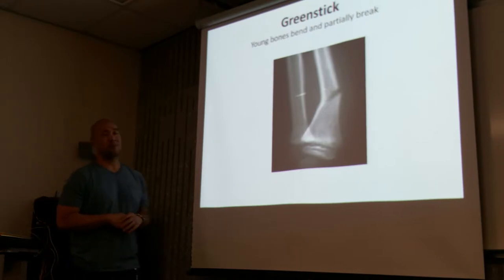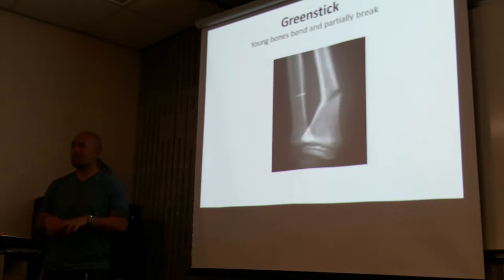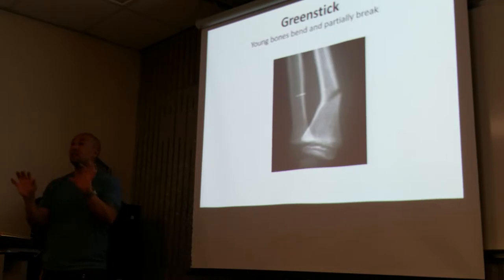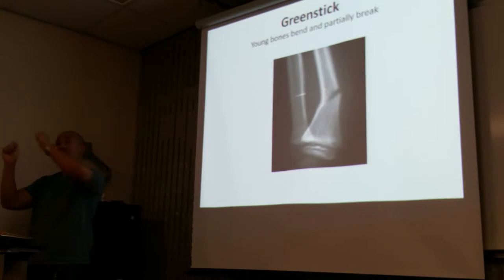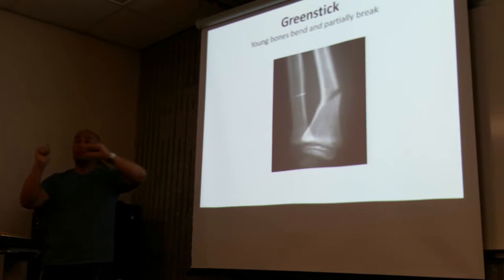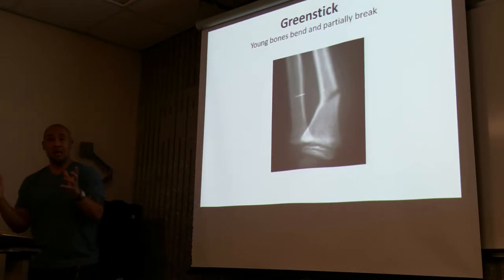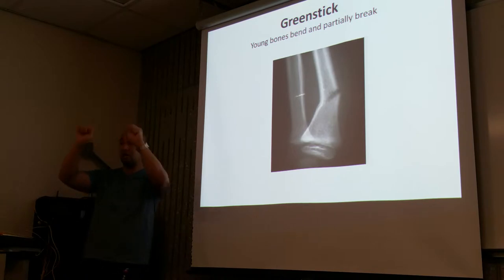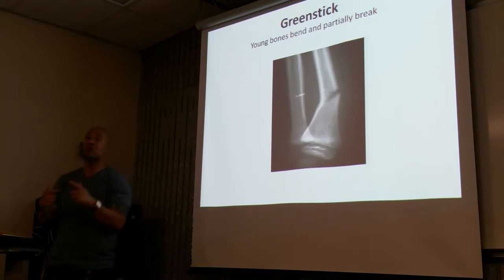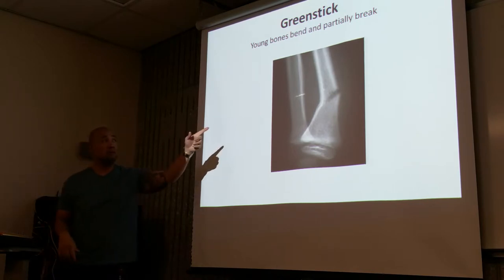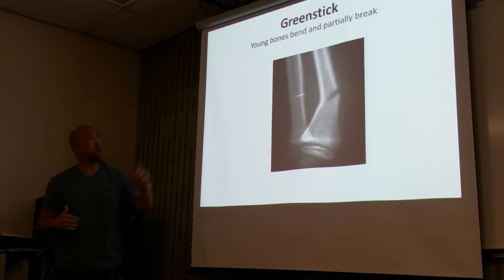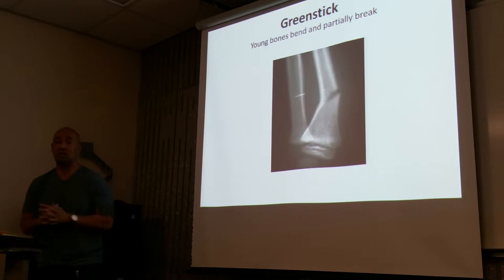Greenstick fracture — green stick referring to a young branch. With a branch from a young tree it's very pliable — you can bend it. This applies to younger patients. It'll bend and it'll only break the exterior or the ostium of the bone, so it's incomplete. Another word for greenstick is also an incomplete fracture.